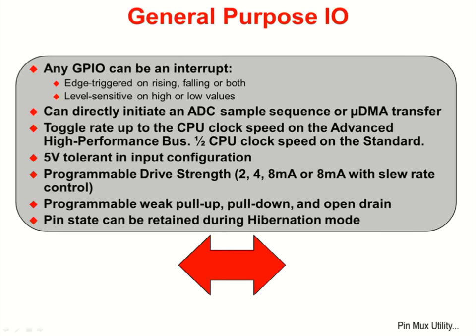The GPIO is extremely flexible. Any GPIO pin can be an interrupt — edge triggered on rising, falling, or both — or level sensitive to high or low values. Any GPIO can directly initiate an ADC sample sequence or a DMA transfer. The toggle rate can be as high as the CPU clock speed on the advanced high performance bus. All GPIO inputs are 5V tolerant.